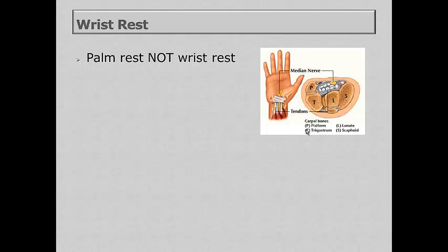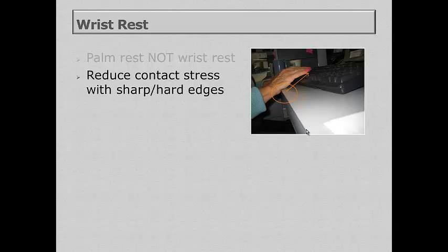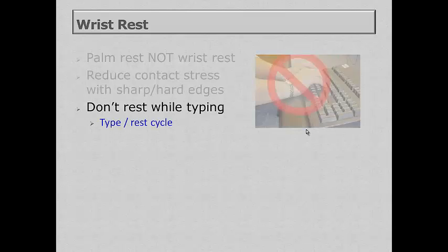Let's take a look at wrist rests. We should really consider them palm rests, not wrist rests. The carpal tunnel is a very tender area of the body without a lot of protection, so resting your wrist on anything is a poor idea while typing. It's recommended that when typing, you do not rest your hands at all — instead, you type and perform a rest-type cycle. If you do need to rest, rest on the palm of your hand, not the wrist. Edge guards are available for areas where a person is using a keyboard on a very sharp-edged desk to reduce contact stress.